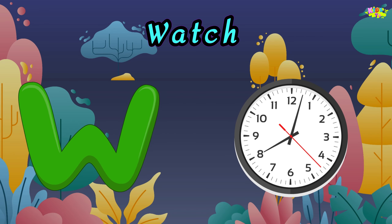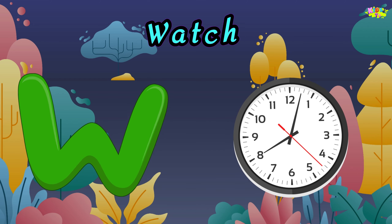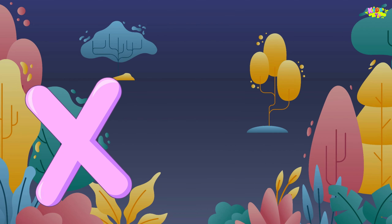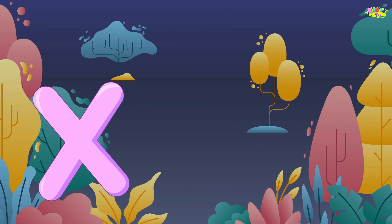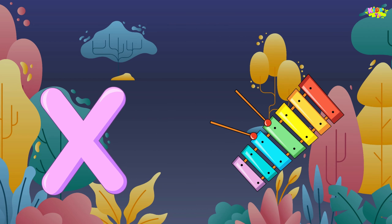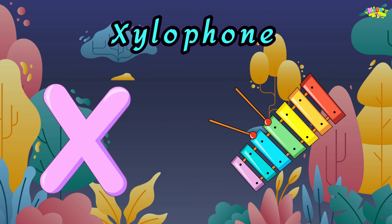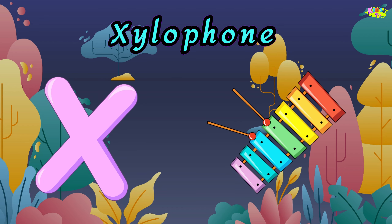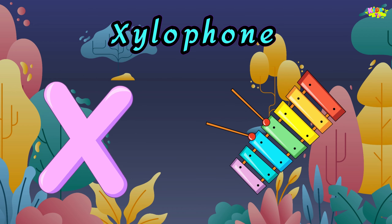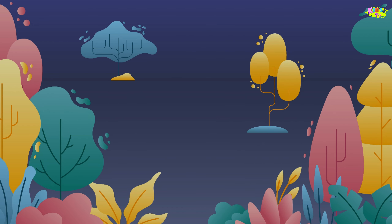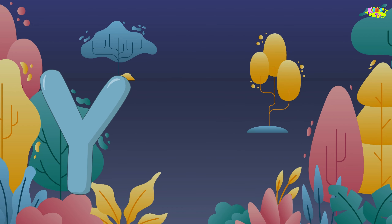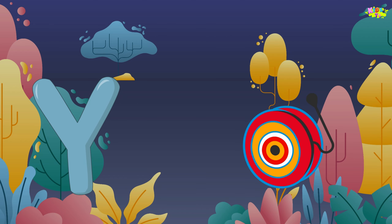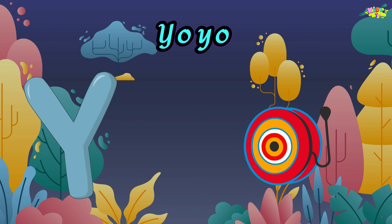W is for watch. V, V, watch. V, V, watch. W, watch. X is for xylophone. X, X, xylophone. X, xylophone.